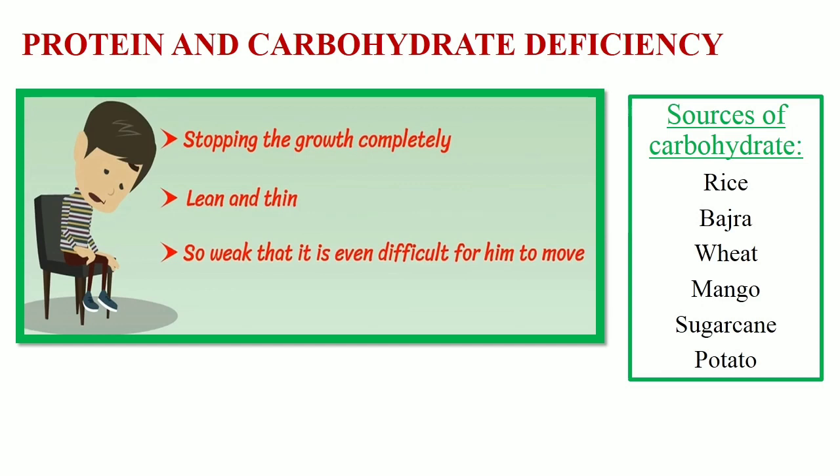Protein and carbohydrate deficiency: If the diet is deficient in both protein and carbohydrate over a long time, there is a threat of stopping growth completely. The person becomes lean and thin and then so weak that it is even difficult for them to move. The person must intake foods such as rice, bajra, wheat, mango, sugarcane and potato, which are good sources of carbohydrate.